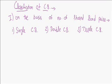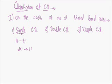As the name indicates, a single covalent bond means two atoms are bonded by one covalent bond. One covalent bond is formed by the sharing of two electrons, or we can say by the sharing of one bond pair.